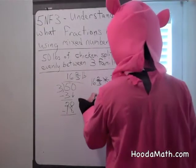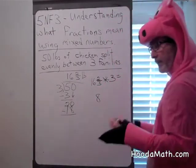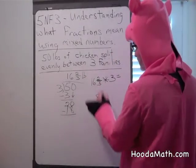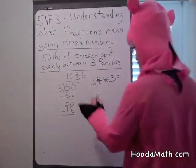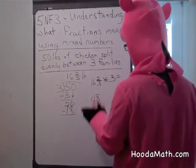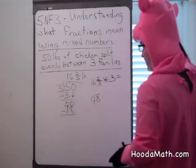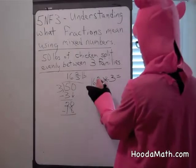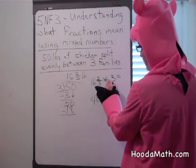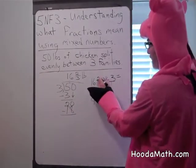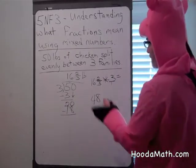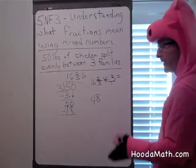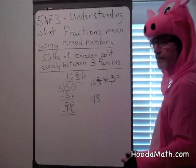Three times six is eighteen. Regroup — remember, there's a one. Three times one is three, plus one is four. Now let's multiply three times two-thirds. We can put a one under the three if you'd like. Three times two is six over three. What is six divided by three? Two.